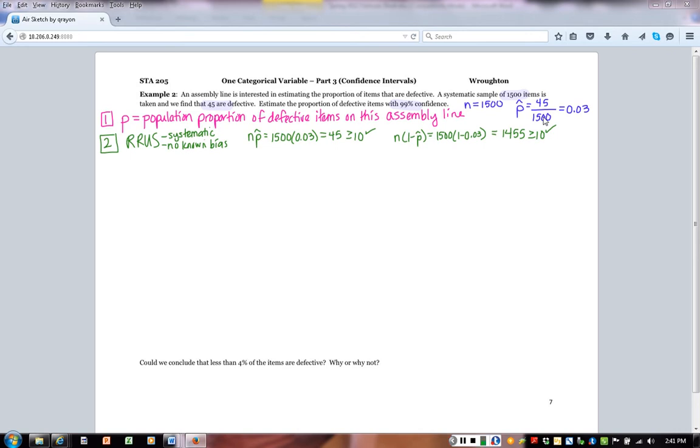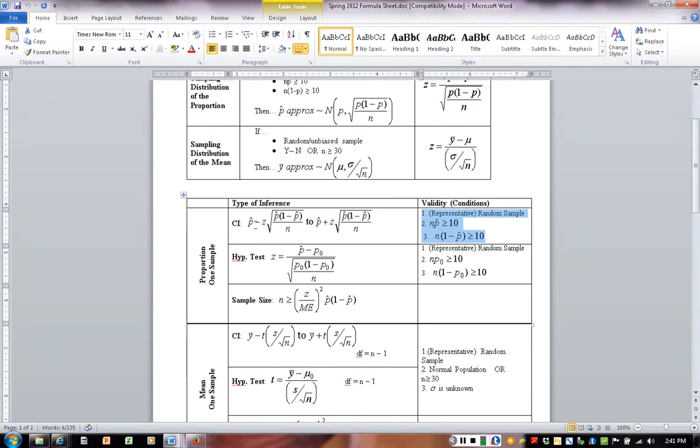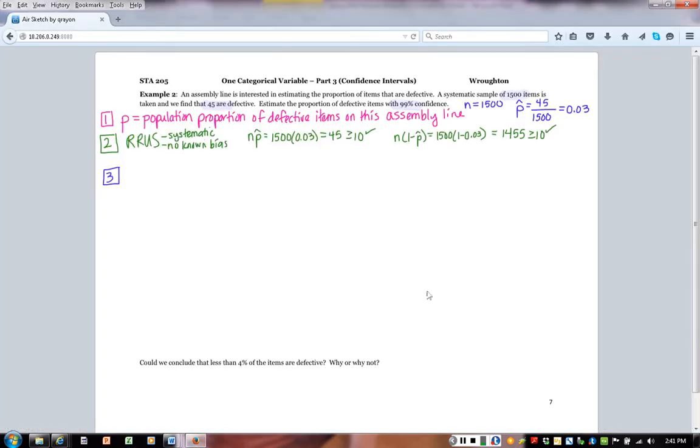The next step is to actually do the formula or actually construct our confidence interval. Looking at the formula sheet, here's our formula for the confidence interval. We already know p-hat is 0.03, we already know n is 1500. The only other thing that we need to find is that z, and if you remember z is based upon how confident we are. So that's where that 99% is going to be helpful for us. Let's first start by drawing our picture so we know how we're going to go to the table. We're trying to find our z. Z is centered at zero. However confident we are goes in the middle, so we're 99% confident, which is 0.99 in decimal form.